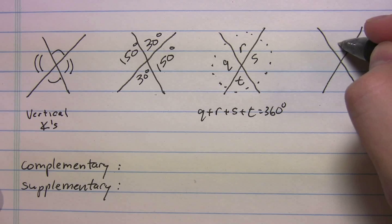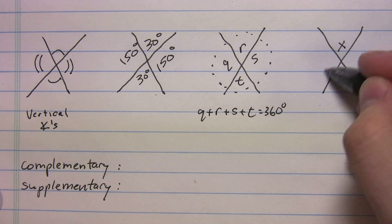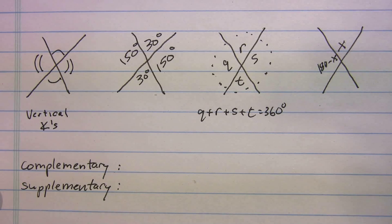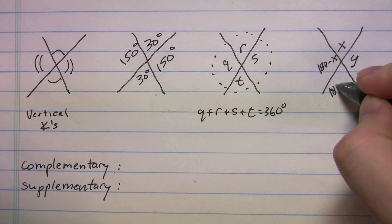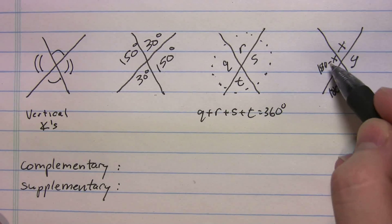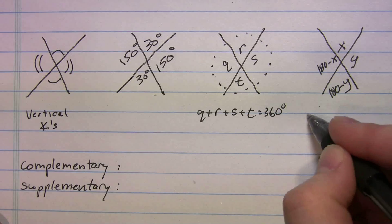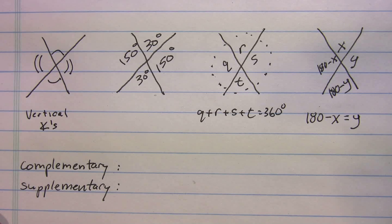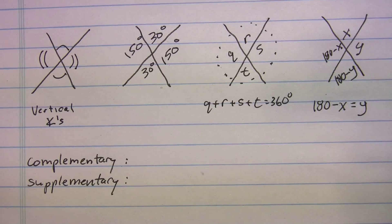If I call one angle x, the angle supplementary to it is 180 minus x. If I call another angle y, then its supplement is 180 minus y. On an SAT question they might ask what is x in terms of y — since those two angles are equal, you can say 180 minus x equals y, then solve for x or y depending on the problem.